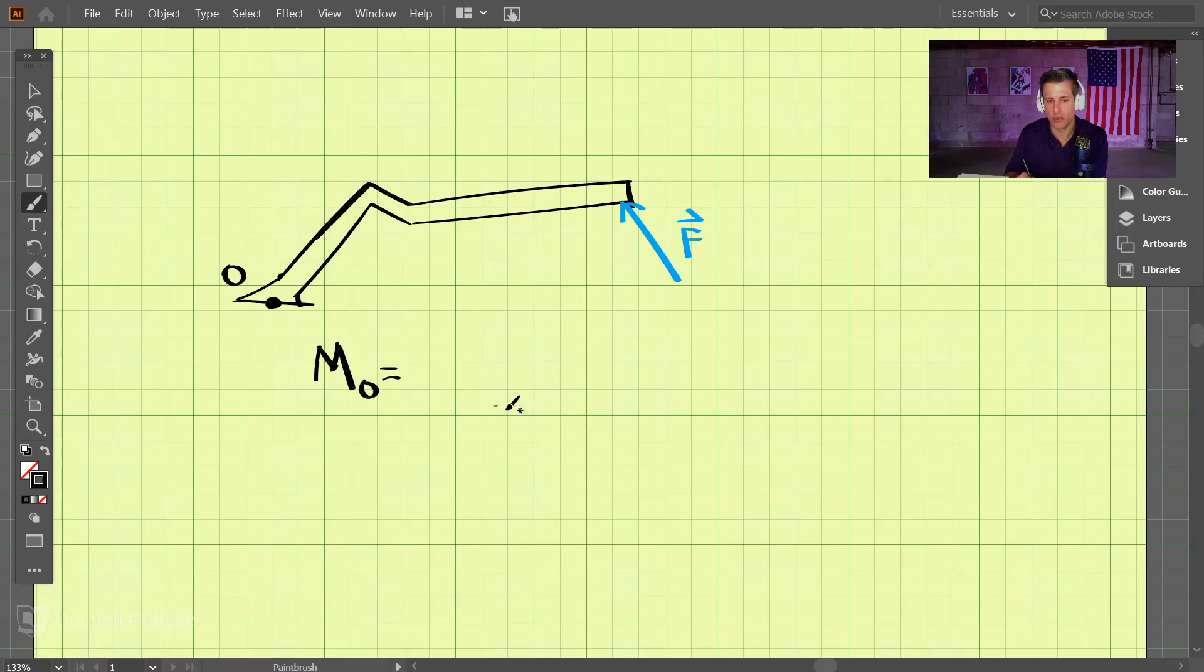...is equal to r cross F. So what is r? Well, r is a position vector, a position vector that goes from the point that you're taking the moment about, o, to where the force is applied. So for this case it would look something like this. This is your r vector.